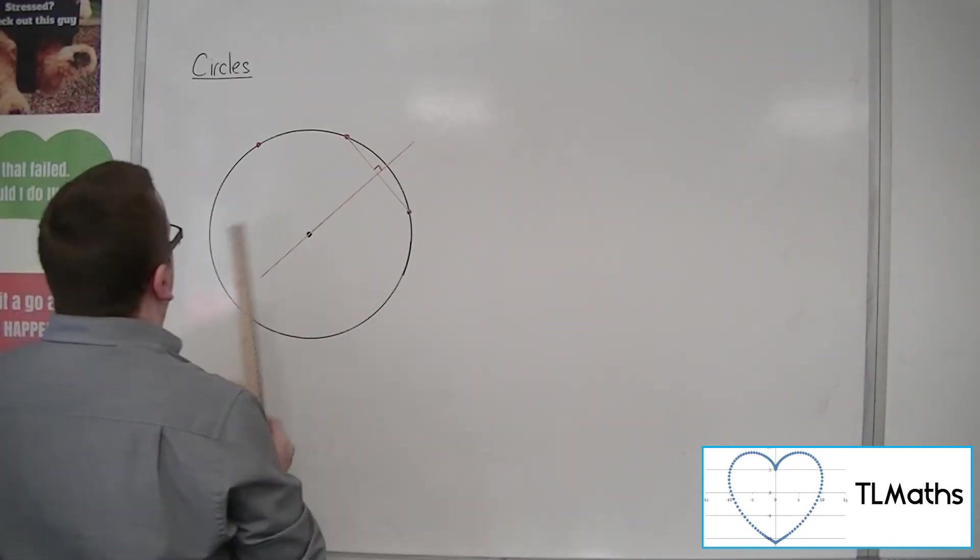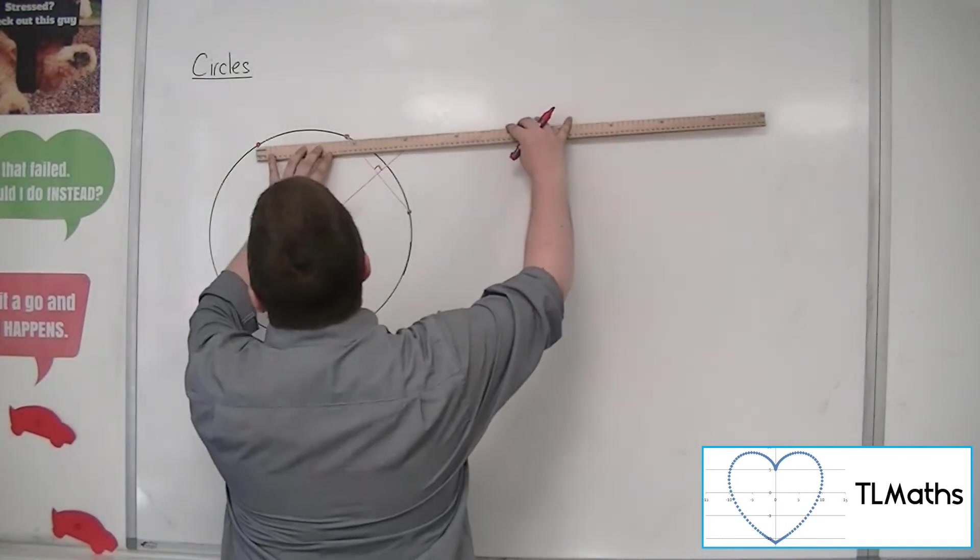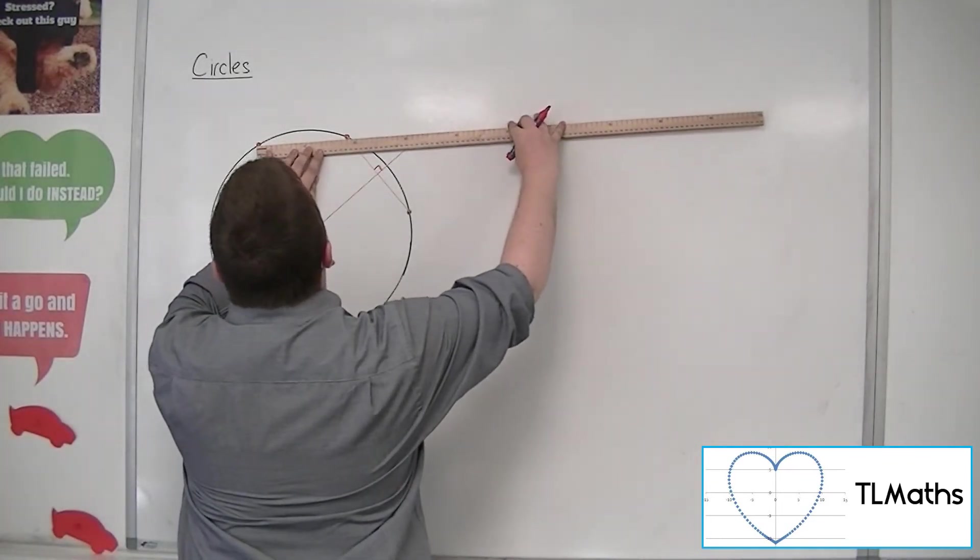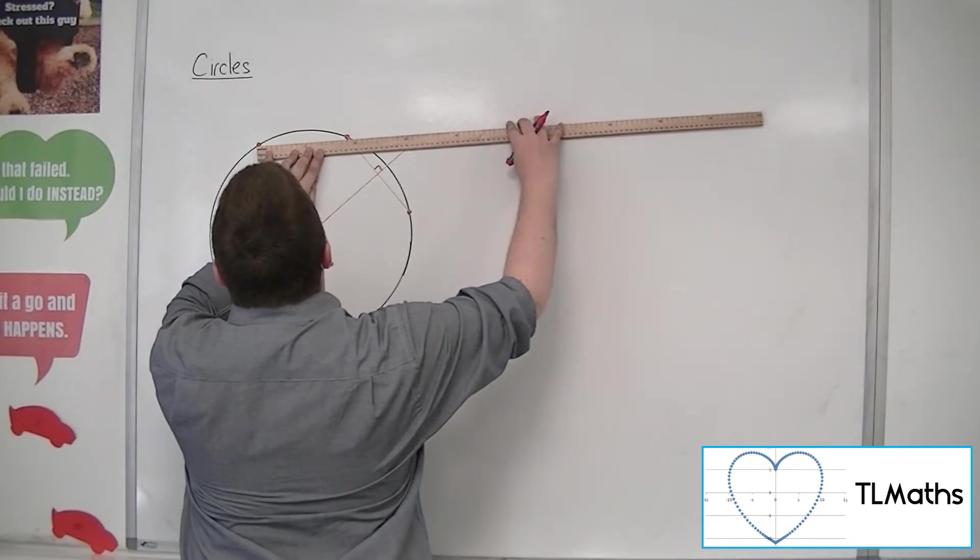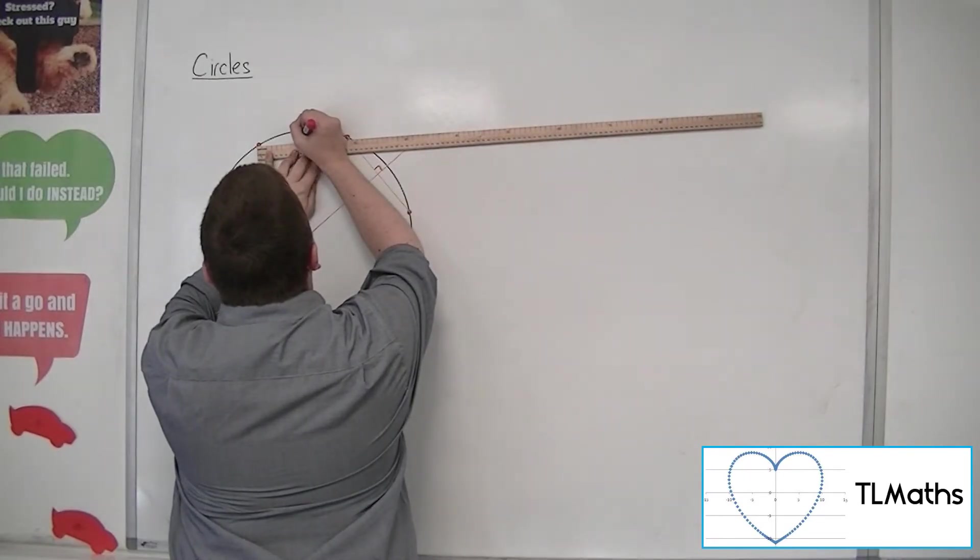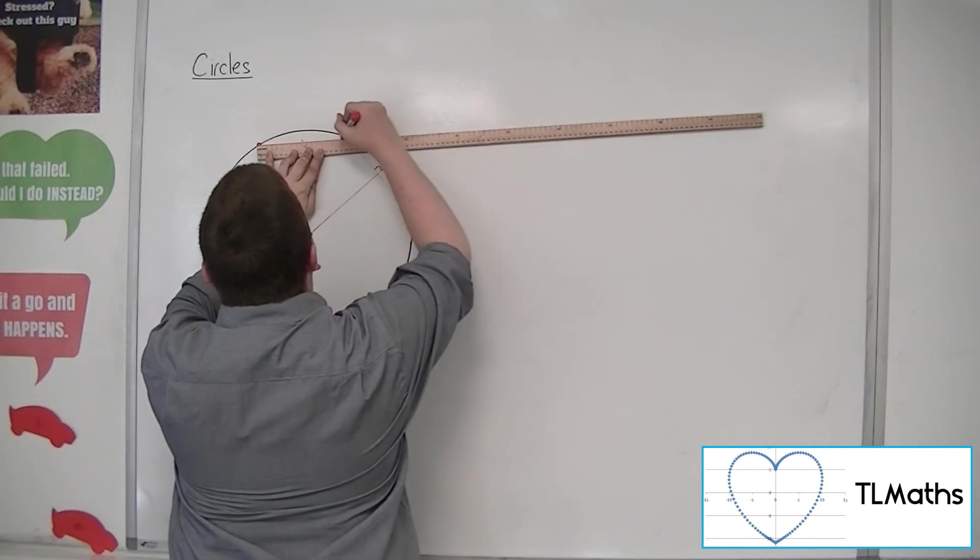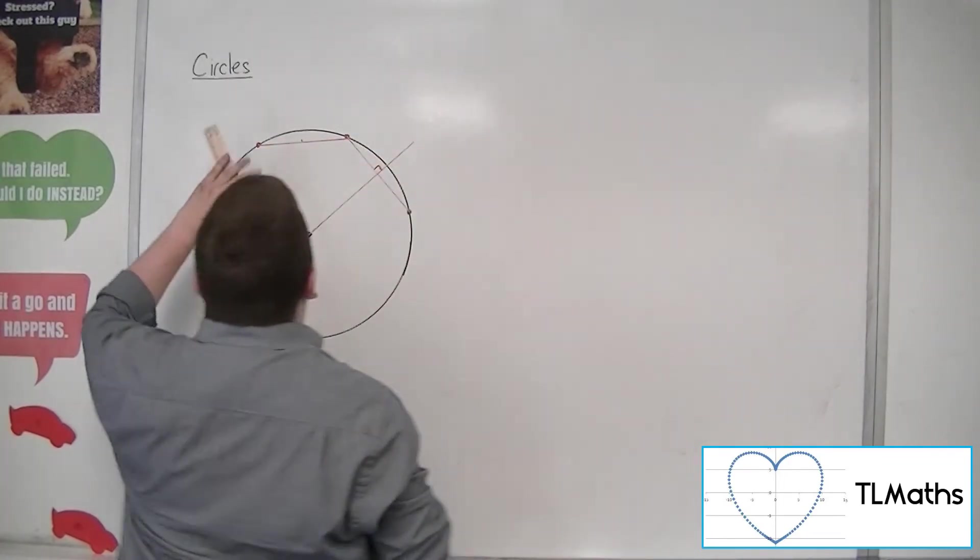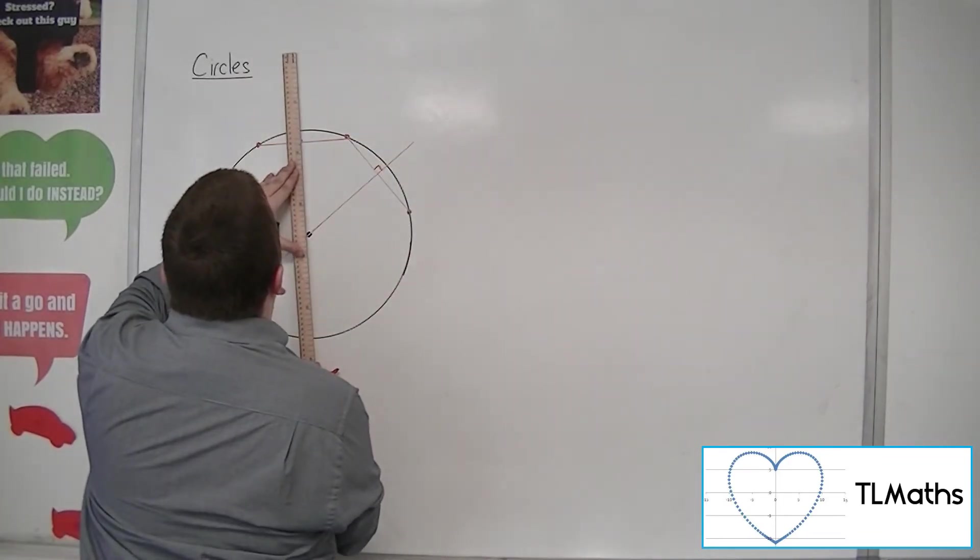then what you could do is say, well, that's about there, so there's the midpoint there. So if we draw the perpendicular bisector of that line,